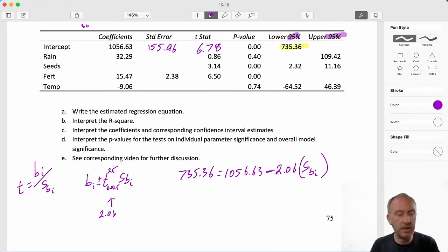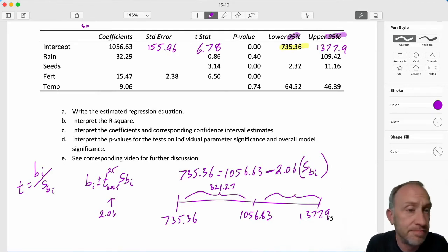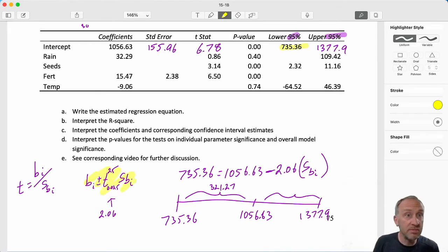I need my upper limit. I now know the size of the margin of error between 1056.63 and that lower limit 735.36. Using that margin of error, I just add that because this distance is exactly the same. 1056.63 minus 735.36, so that margin of error is 321.27. If I add that to the point estimate, I have 1377.9. That's my upper limit. I could have also used the formula to get the upper limit. You can choose whichever way is faster and easier for you.